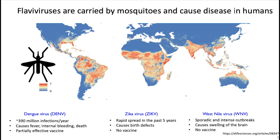Besides wanting to combat disease for its existing impact on human health, we also have indications that this family of viruses will become more widespread and common as people become more connected through global travel and our changing climate extends where the vector mosquitoes can live.